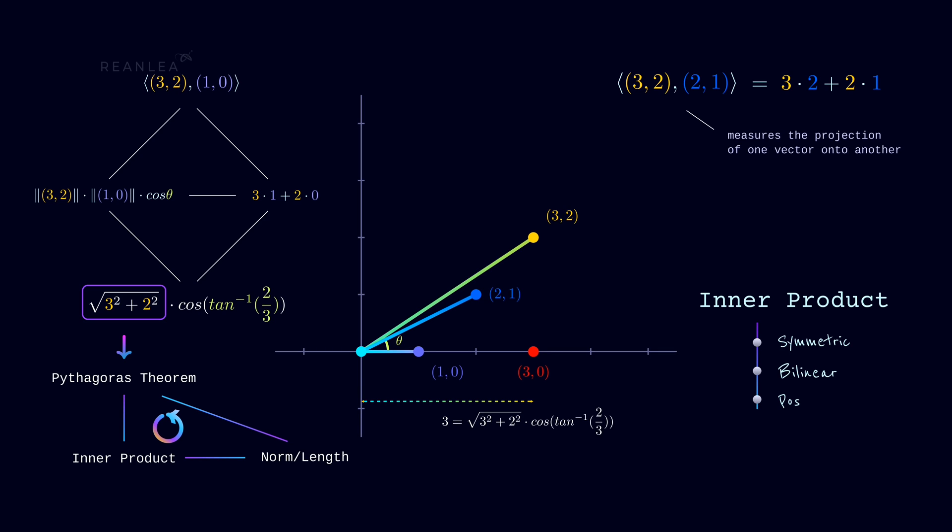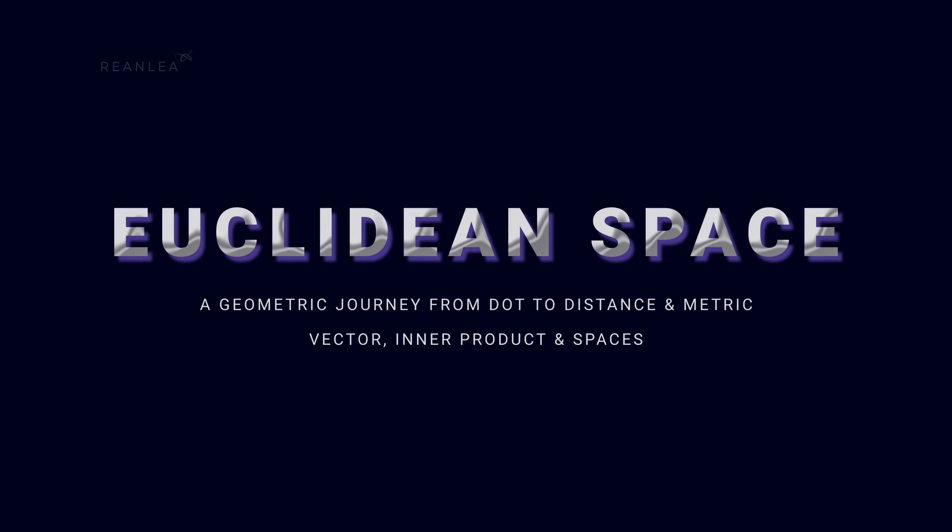On top of that, inner product satisfies some fundamental properties like it's symmetric, bilinear, and positive definite. And the question is can we visualize and prove all these fundamental properties geometrically? Again, since the norm of vector gives a glance on the distance between two points, therefore we can define a space where the distance is defined and generalize that. And here this is the geometric journey of Euclidean space from dot to distance and metric, vector, inner product, and spaces.